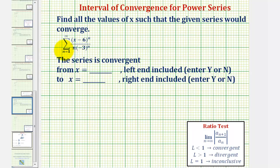Looking at our infinite series, notice how we have the quantity x minus six here, which means the interval of convergence will be centered at positive six. We'll first apply the ratio test, where we know this limit must be less than one for the series to converge. This will give us an open interval of convergence, and then we'll test the endpoints to determine if this series converges or diverges at the two endpoints.